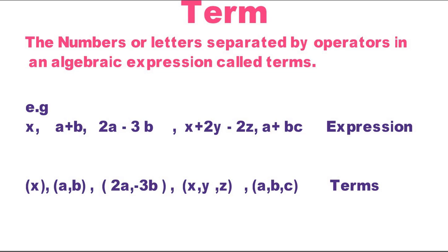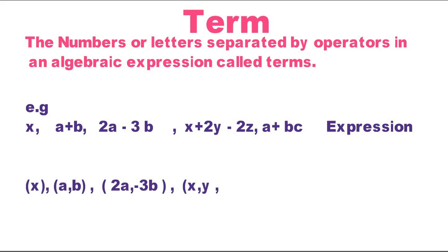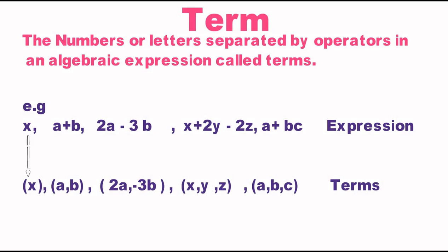For example: x; a plus b; 2a minus 3b; x plus 2y minus 2z; a plus c — these are all expressions, and these are their relevant terms. The term of x is x; a plus b has two terms: a and b; 2a minus 3b has terms 2a and minus 3b; x plus 2y minus 2z has terms x, y, and 2z; a plus bc has terms a, b, c.